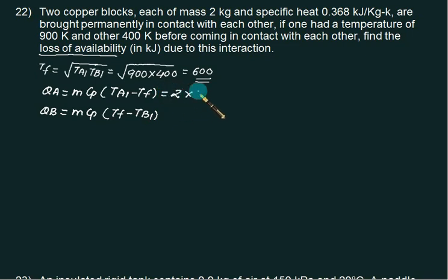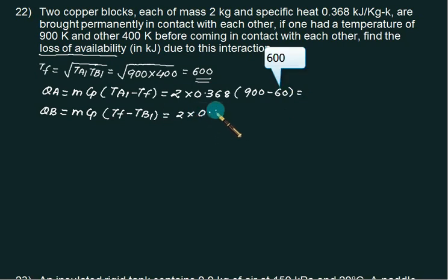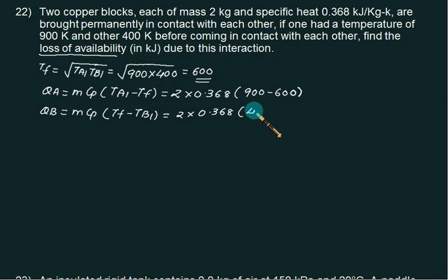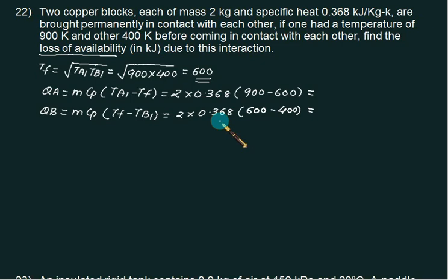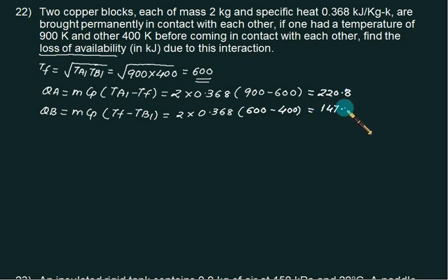Mass is 2, Cp is 0.368, T_a1 is 900, T_final is 600. For block B: 2 × 0.368 × (600 − 400). Heat ejected by block A comes out to be 220.8 kJ, and heat received by block B is 147.2 kJ.